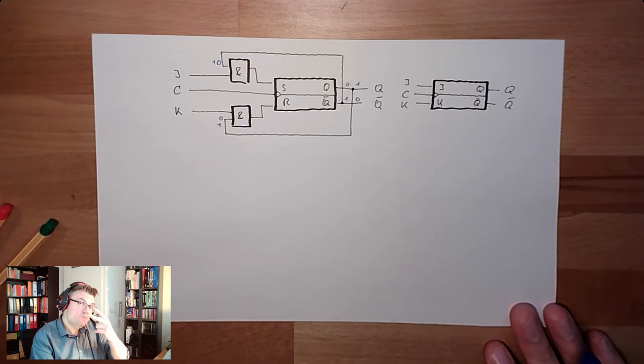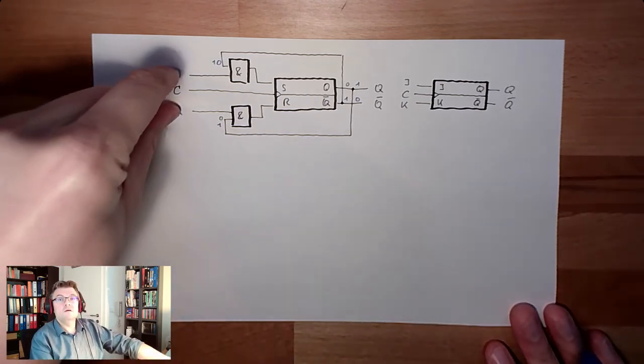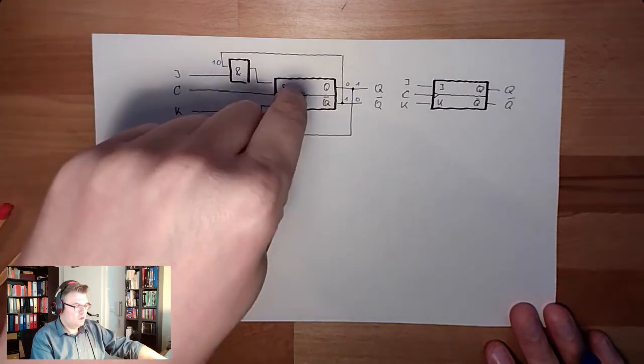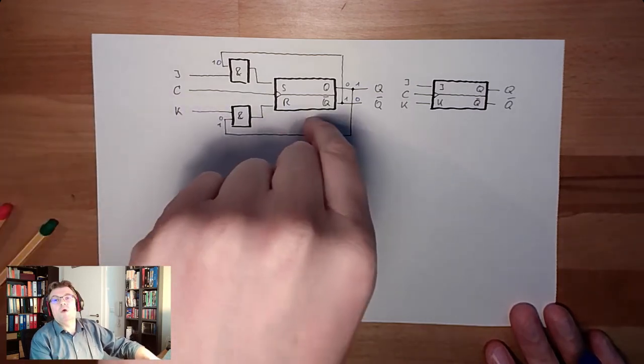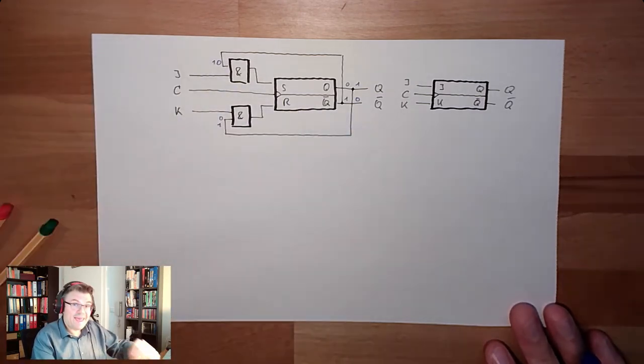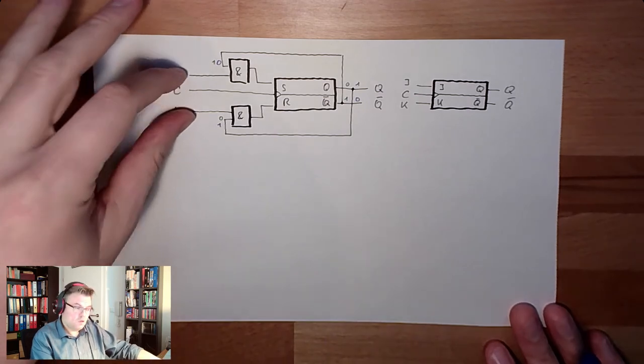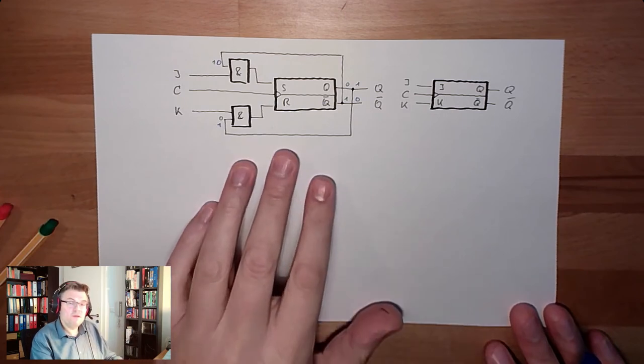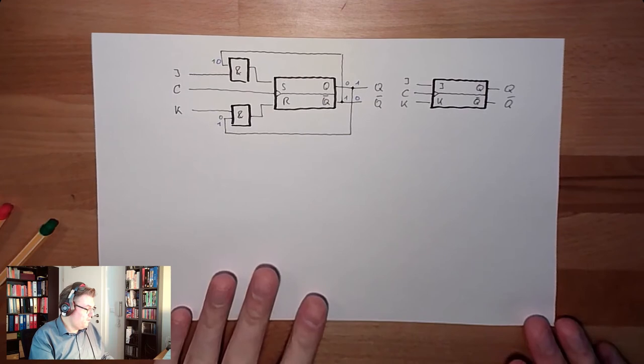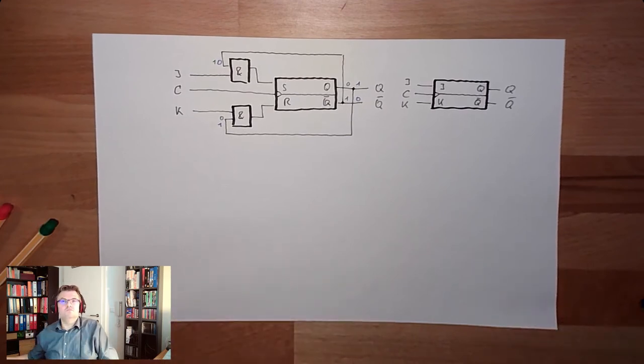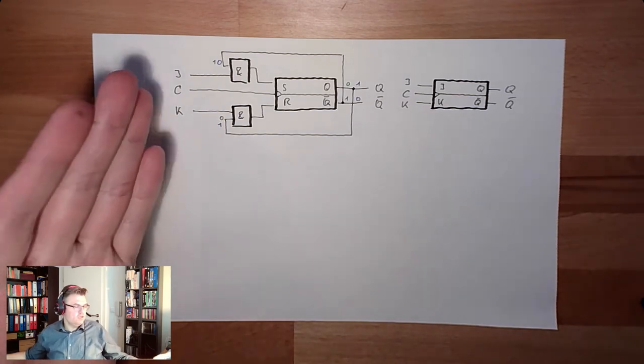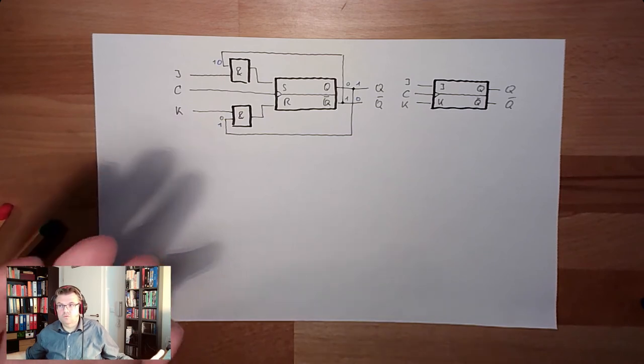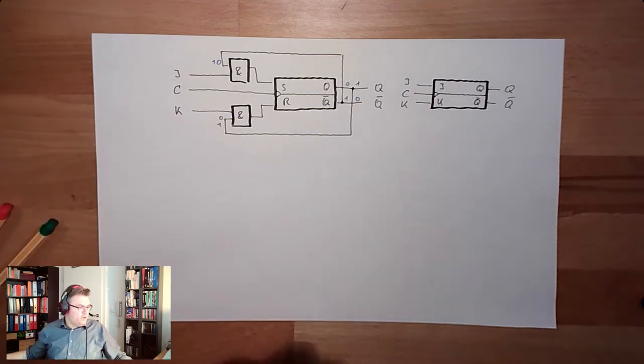So, we have now three different possibilities. Nothing. Nothing changes. Not toggling. Nothing. Only J, memory will be set. Only K, memory will be reset. And if J and K are here, so if both are set to one, we will see a toggling. So, with a J, K flip-flop, I can select what the thing is doing. So, it's quite versatile. I can use it as set line. I can use it as reset line. Or I can select toggle. That's great. JK flip-flop.